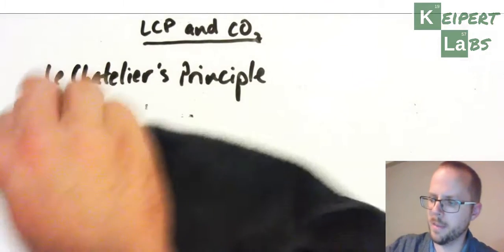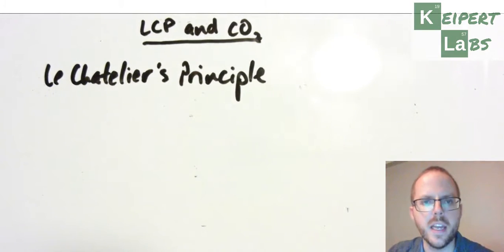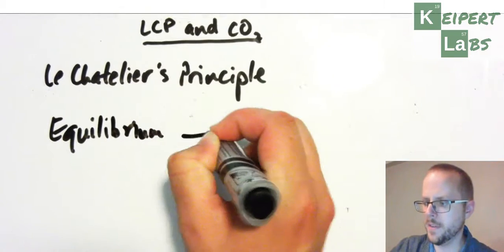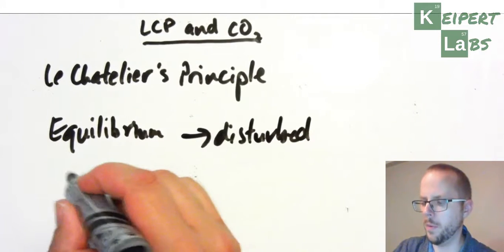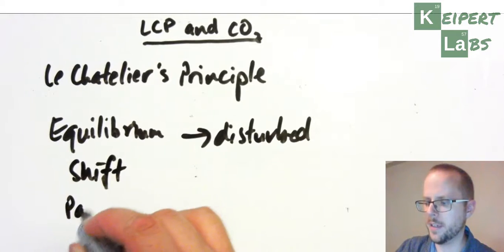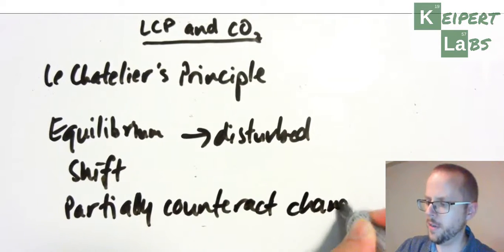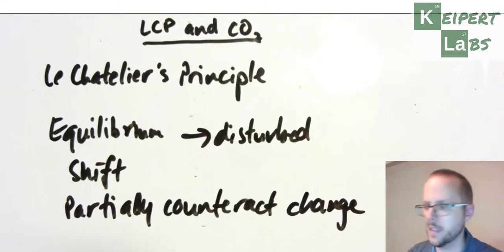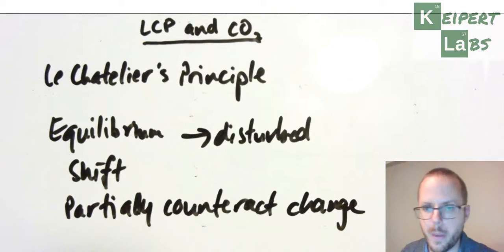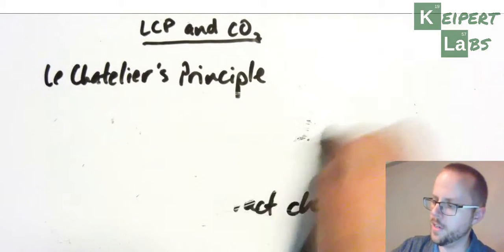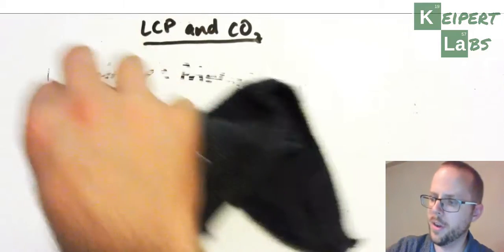Let's spend a little bit of time first just revising Le Châtelier's Principle. When a system that's at equilibrium is disturbed, we get a shift in order to partially counteract the change. So if we increase something, it will shift to try and decrease it; if we decrease something, it will shift to try and increase it. The equilibrium will shift either to the left or to the right, favouring either the reactant side or the products. Remember, it's a fairly blunt instrument. We've looked at it in terms of the Haber process before, and now we're focusing on the equilibrium of carbon dioxide.